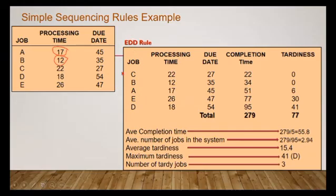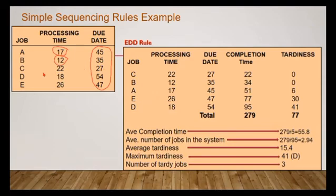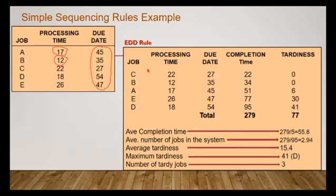For the EDD — earliest due date rule — you have to rearrange the order of the jobs based on their due date; the earliest due date comes first. Looking at the due dates, the minimum starts with 27, and the corresponding job is C, so job C comes first. The next is 35, meaning job B follows C. Then 45, corresponding to job A. You rearrange in that way, making sure the processing times go along with them — job C is 22, job B is 12, job A is 17.